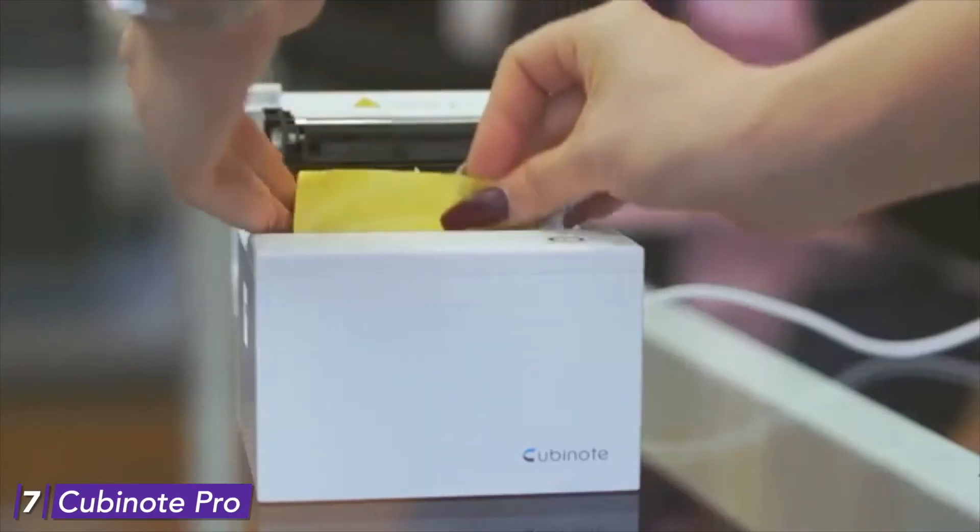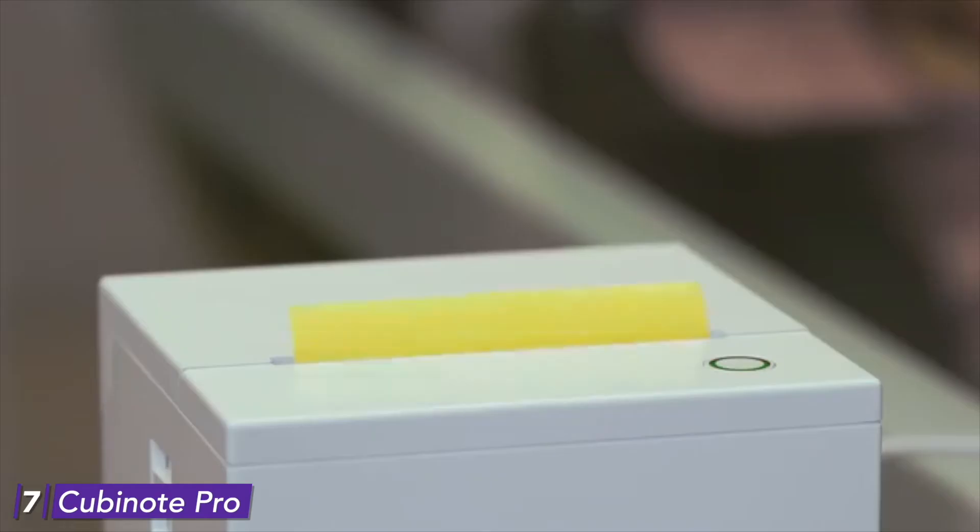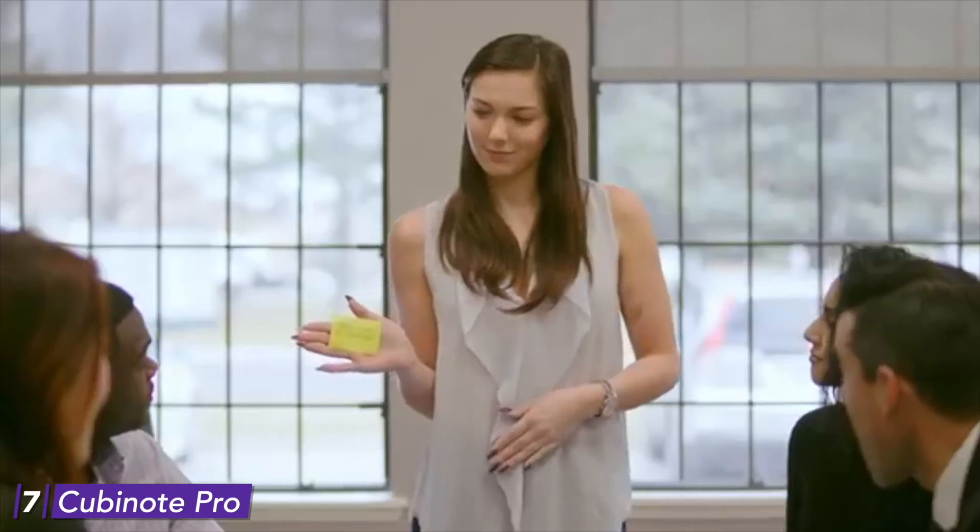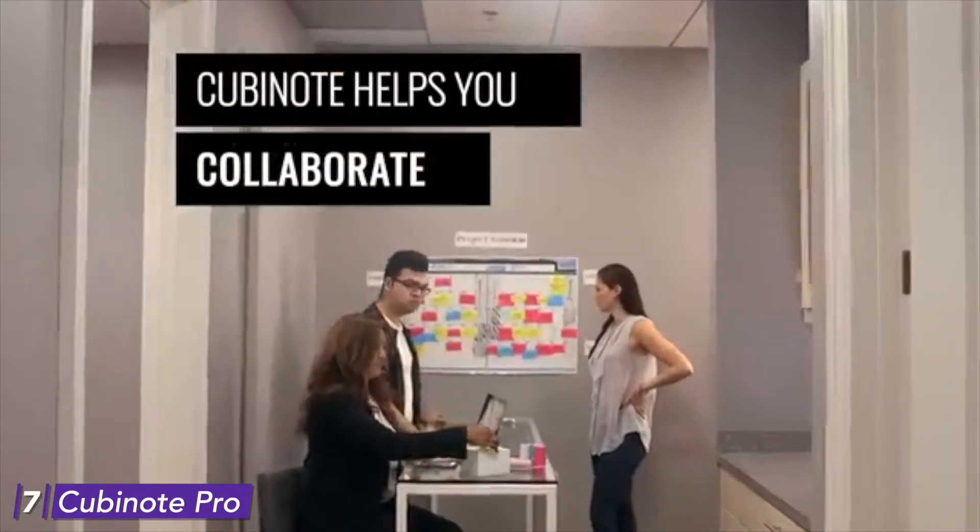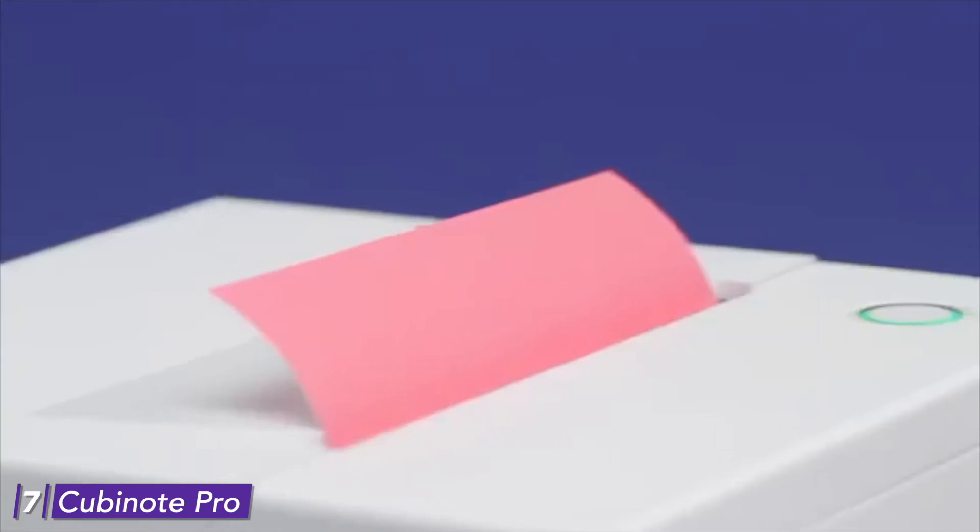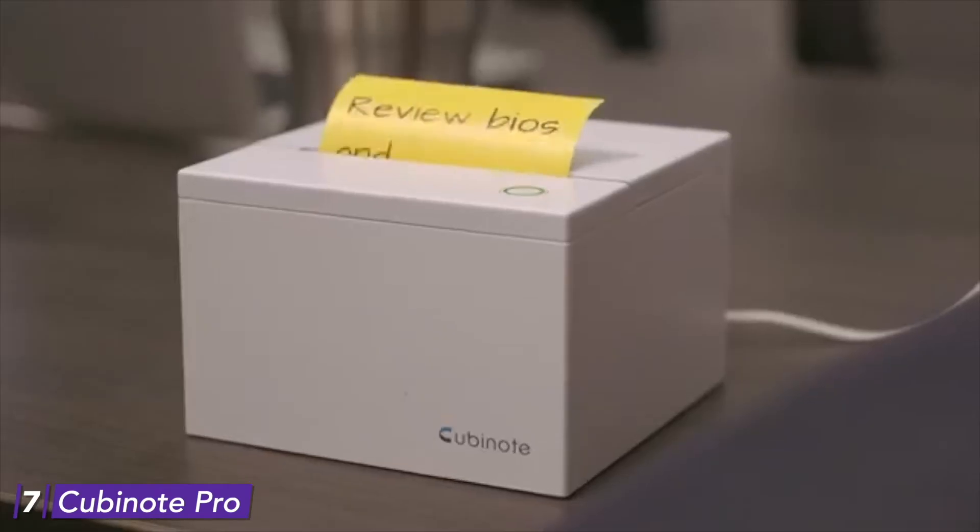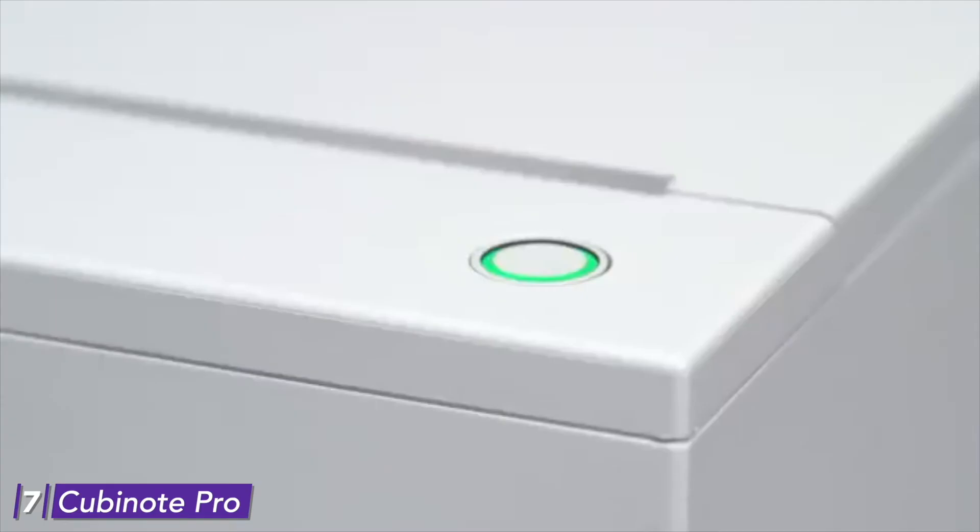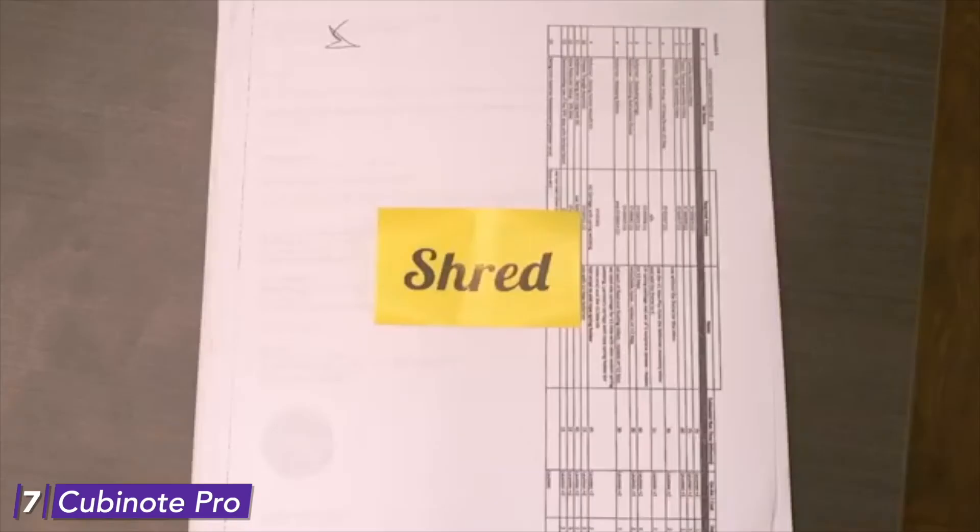Number 7. Cubinote Pro. A small new device introduced in the lino printers. Cubinote Pro, a wireless thermal printer that works with sticky notes. Now, all that you can create on your phone, you can print it on a sticky note. Compact. Cubinote Pro is a small cube-like cordless device that doesn't need ink cartridges for printing.